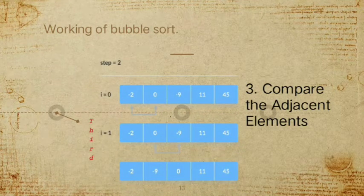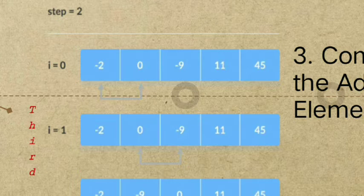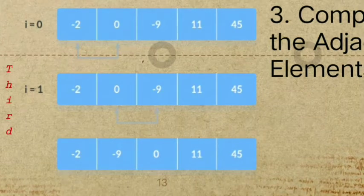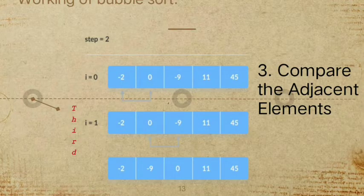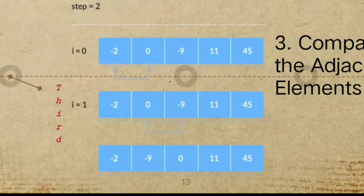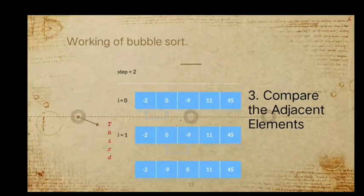In the third step, we compare adjacent elements again from the start — index 0 to index 1. Is negative 2 greater than 0? False, so we proceed. We compare 0 and negative 9 — since 0 is greater than negative 9, they are swapped. We can see the two elements are swapped and proceed to step 4.